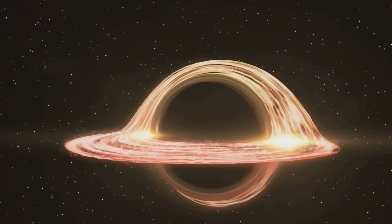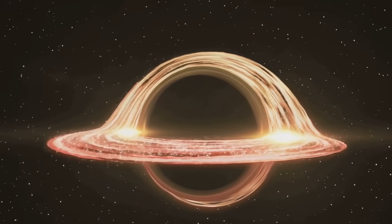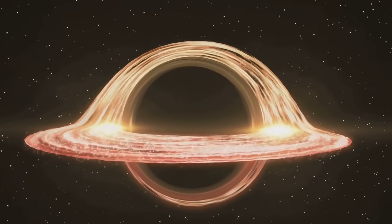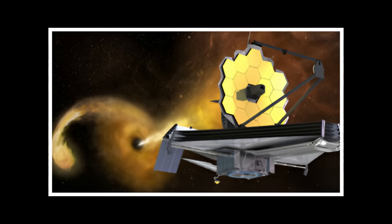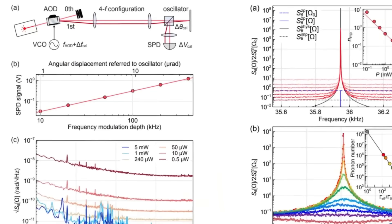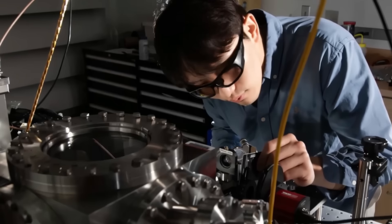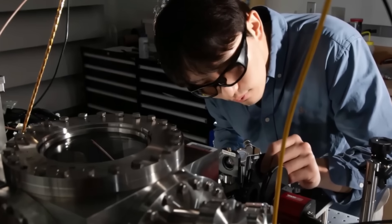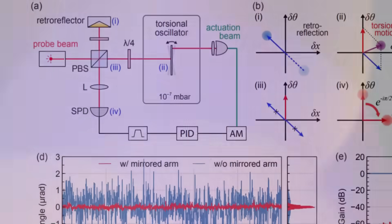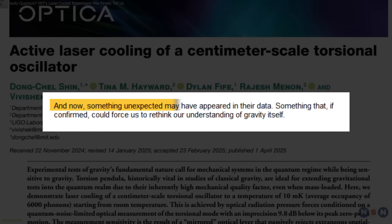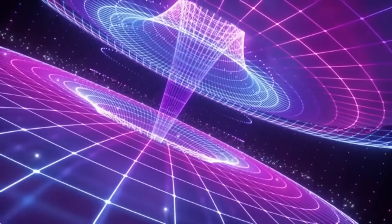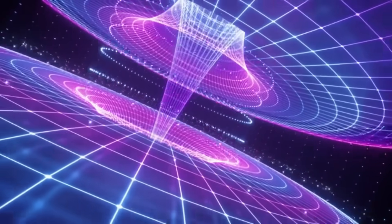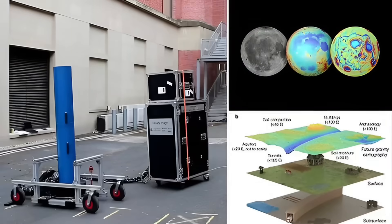These technologies aren't just laboratory curiosities. They're the next generation of tools that will map our planet's interior, find water in drought-stricken regions, and potentially reveal aspects of reality we've never been able to measure before. The University of Birmingham's successful detection of underground tunnels was just the beginning. We stand at the threshold of a new era in sensing technology. This discovery isn't just fascinating, it's unsettling. Because for a moment, gravity, the force that anchors our universe, simply wasn't there.